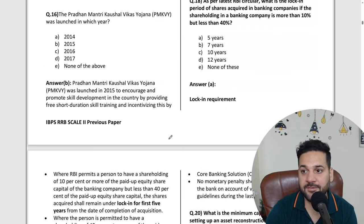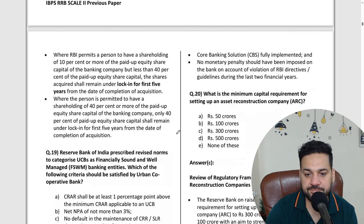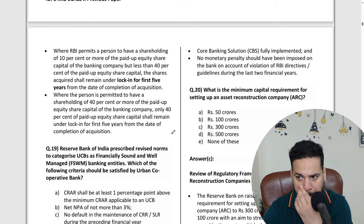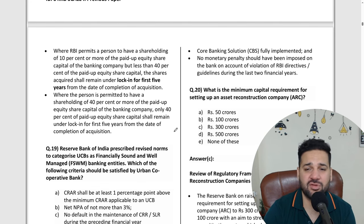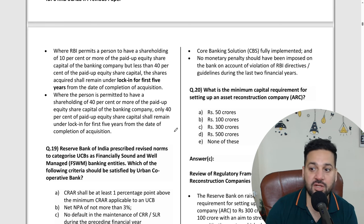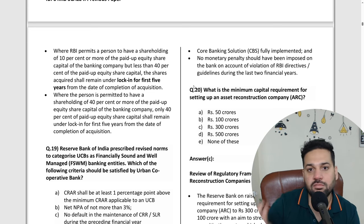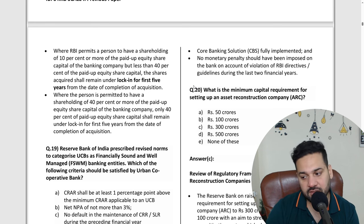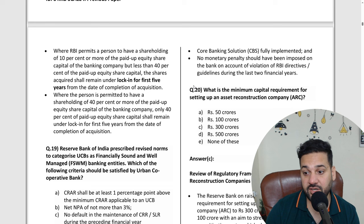Priority sector lending is very important. After that, ARC ki minimum capital requirement — most of the time students see 'as per RBA' written, so they think it's an RBI circular. Here, for example, minimum capital requirement for setting up an ARC — this is a question from RBI guidelines. Even many teachers don't pay attention to this, but RBI guidelines are very very important for your exam.